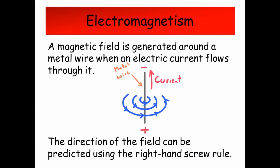Electromagnetism. A magnetic field is generated around a metal wire when an electric current flows through it. The direction of the field can be predicted using the right-hand screw rule.